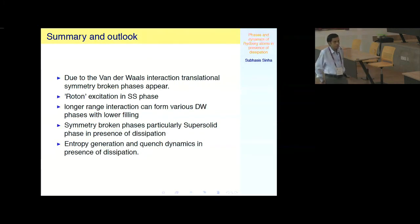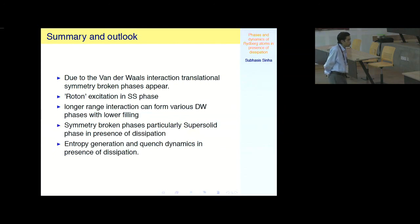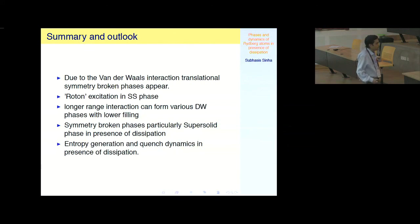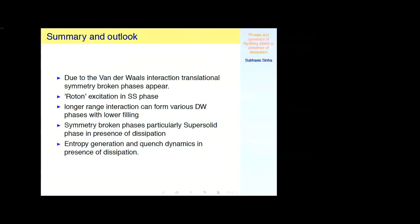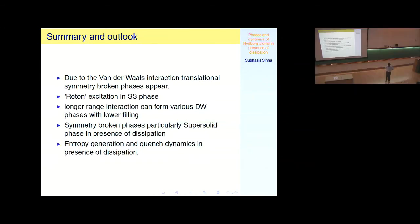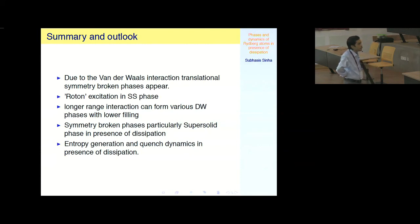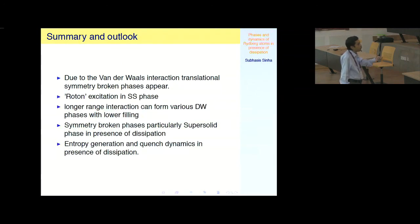Thank you. [Q&A] Question: How does the dissipation timescale compare to the Rabi frequency? Answer: The dissipation timescale — the Rydberg excitation lifetime — is on the order of 100 milliseconds, and the lifetime of the whole system is on the order of seconds. The relevant timescale is ultimately restricted by three-body loss. The Rabi frequency is not the primary timescale here.